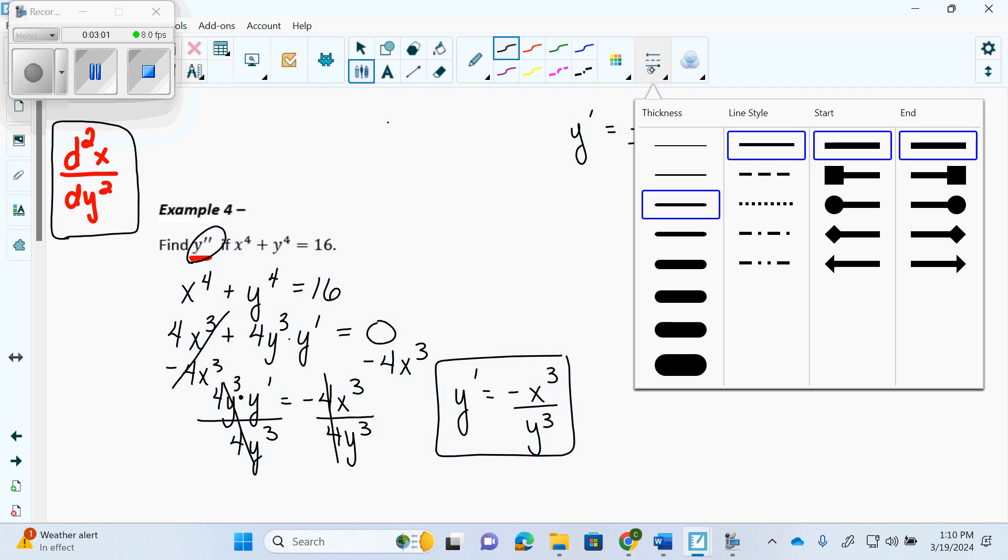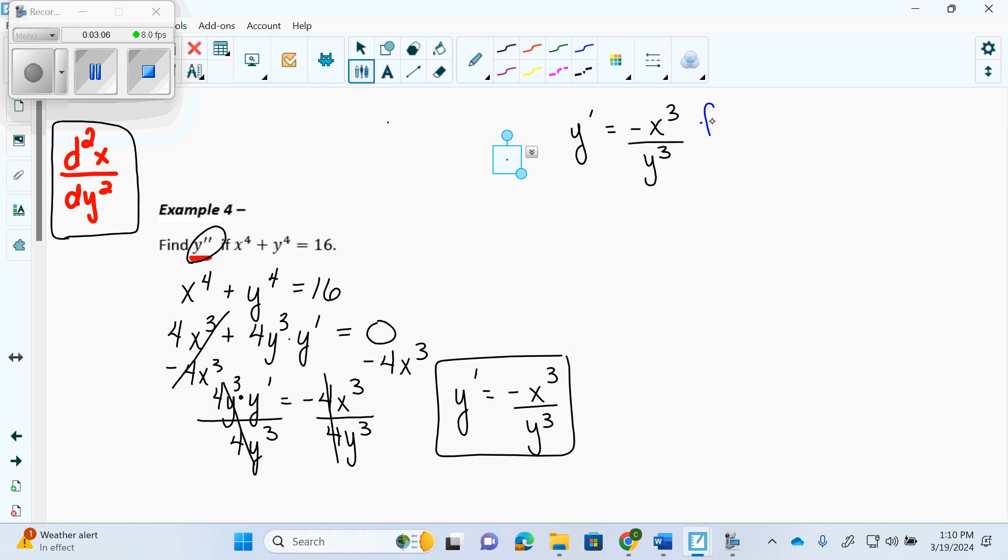So we have f and we have g. f prime is negative 3x squared. g prime is 3y squared y prime. We agree? Alright.